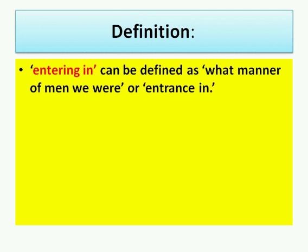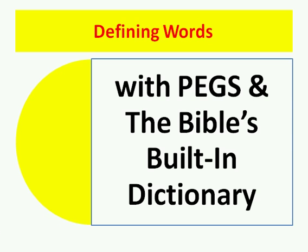So the definition of 'entering in' can be defined as 'what manner of men we were,' or 'entrance in,' because the same umbrella phrases carry these three phrases together. So 'entering in' is 'what manner of men we were,' or 'entrance in.' So we are defining words with the pegs, or the umbrella phrases, using the Bible's built-in dictionary.